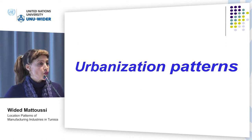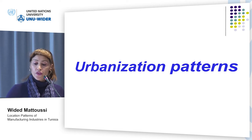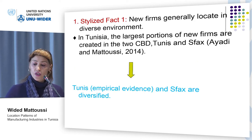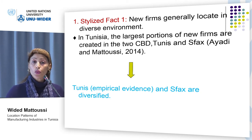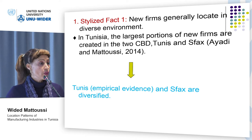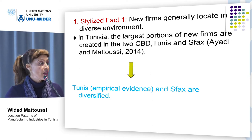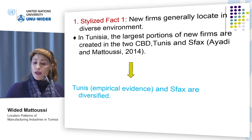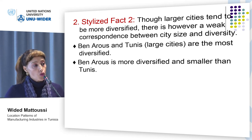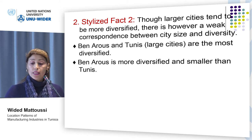Now I will suggest a few facts about urbanization patterns. First, it is well known in the literature that new firms generally locate in diverse environments. In Tunisia, the largest portions of new firms are created in the two central business districts, Tunis and Sfax. One may then conclude that Tunis and Sfax are two diversified governorates. For Tunis, there is empirical evidence about this fact; for Sfax, so far this fact is only based on observed patterns. Second, though larger cities tend to be more diversified, there is however a weak correspondence between city size and diversity. Ben Arous and Tunis are the most diversified governorates in the country; however, Ben Arous is more diversified but smaller than Tunis.